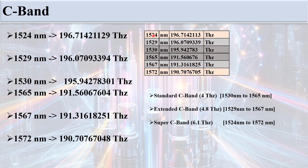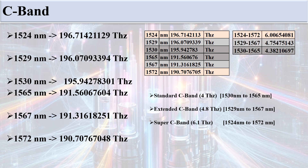This is the nanometer-to-frequency conversion table showing wavelength in nanometers and wavelength in terahertz. The Super C band range is 1524 to 1572 nanometers, which corresponds to 190.70 to 196.714 terahertz. This is all about the Super C Band.